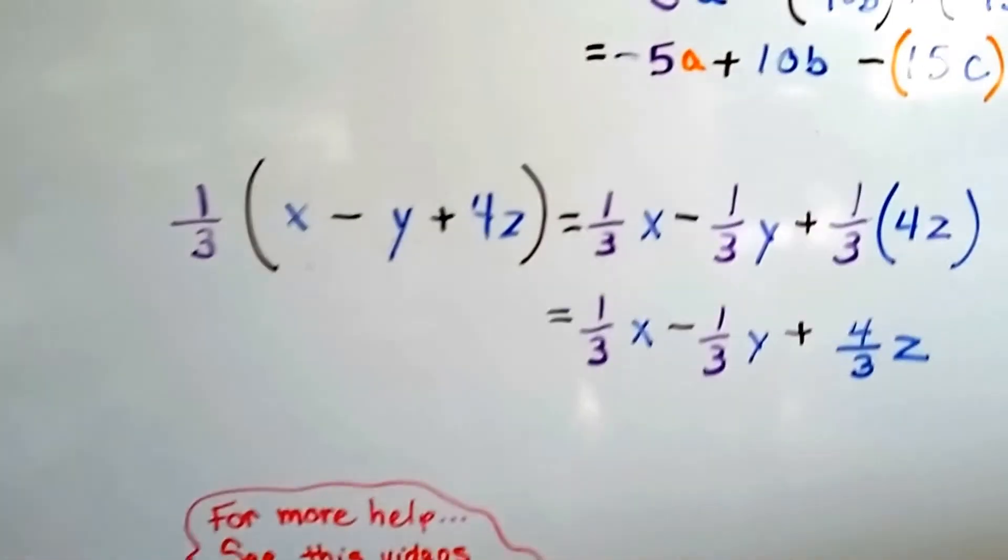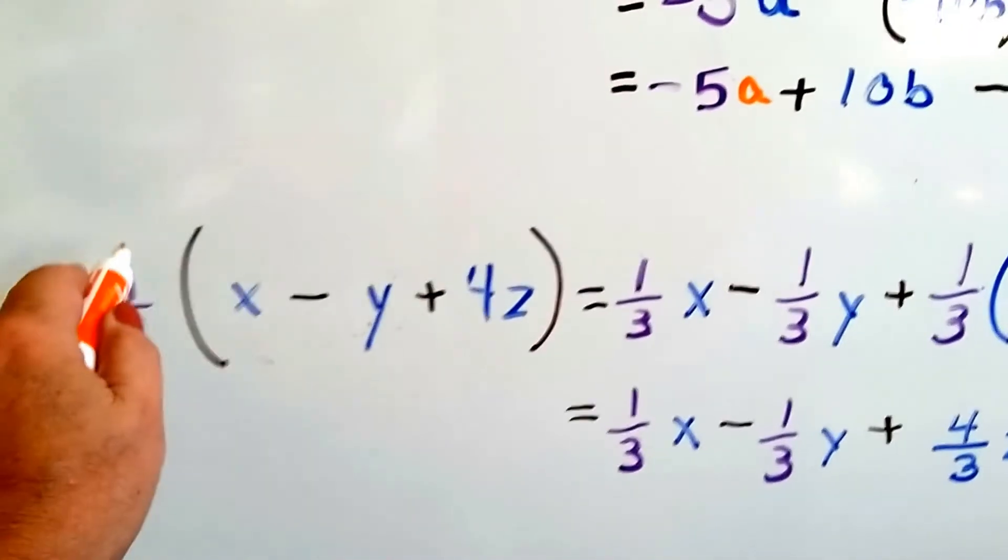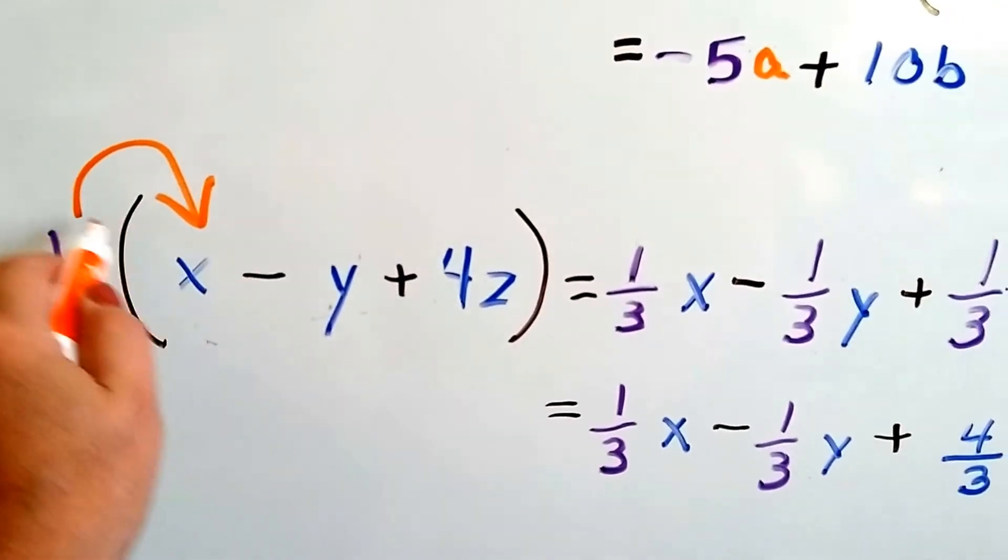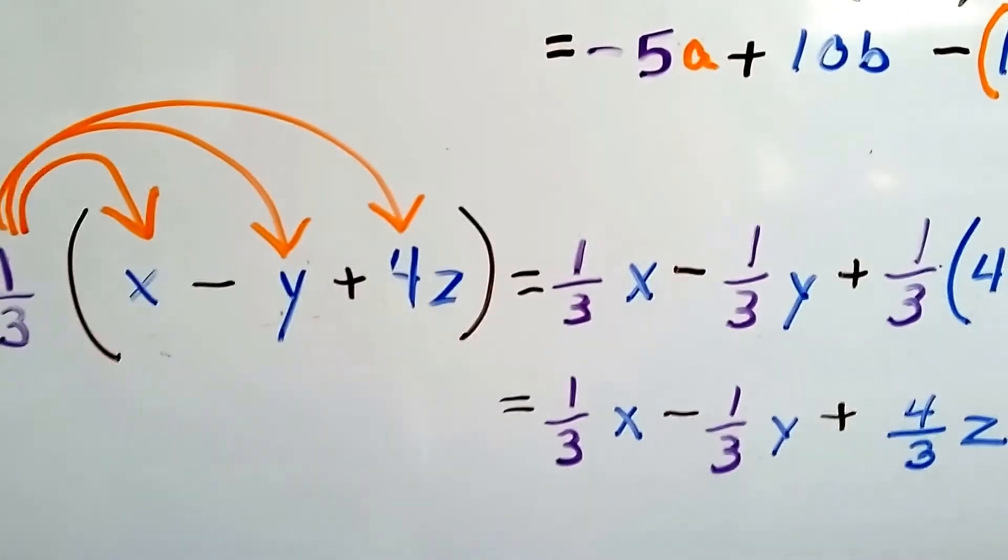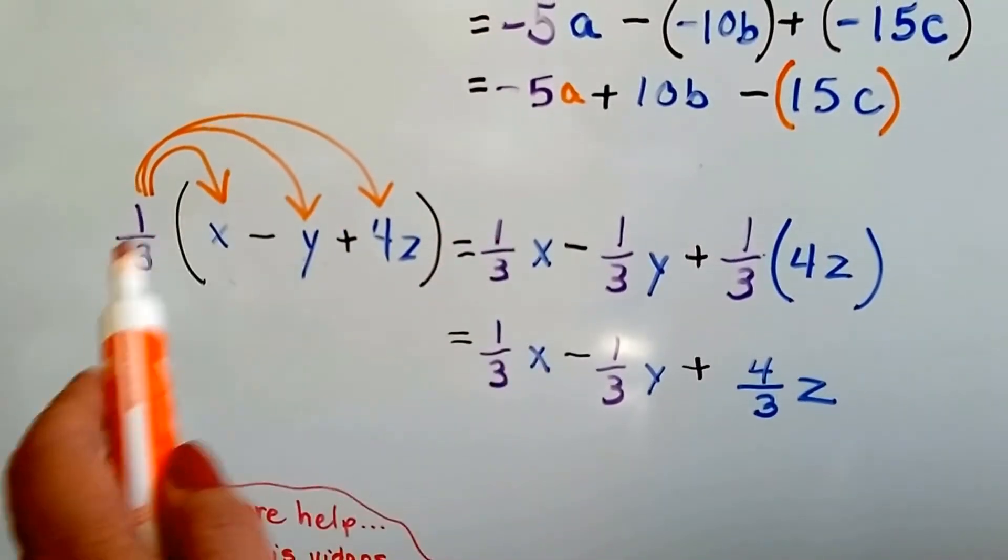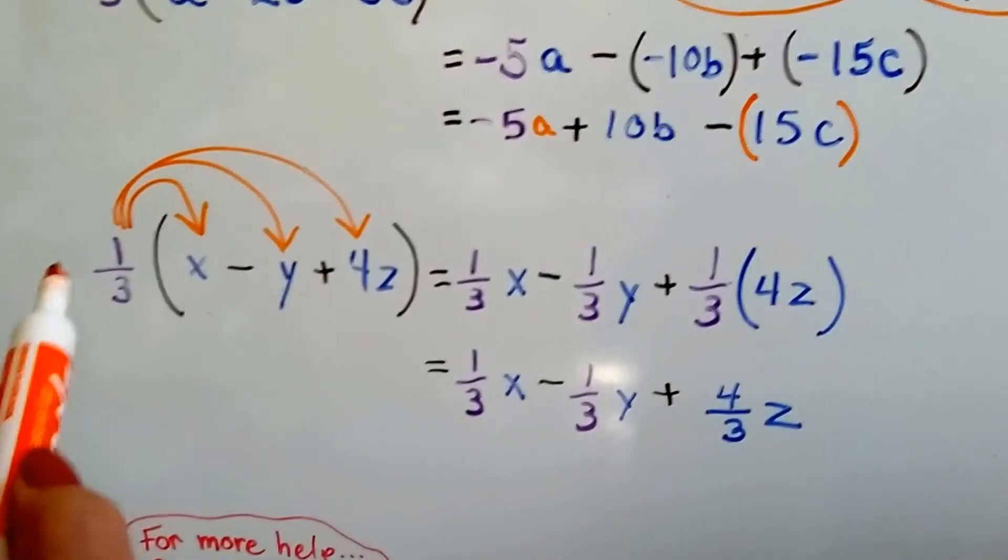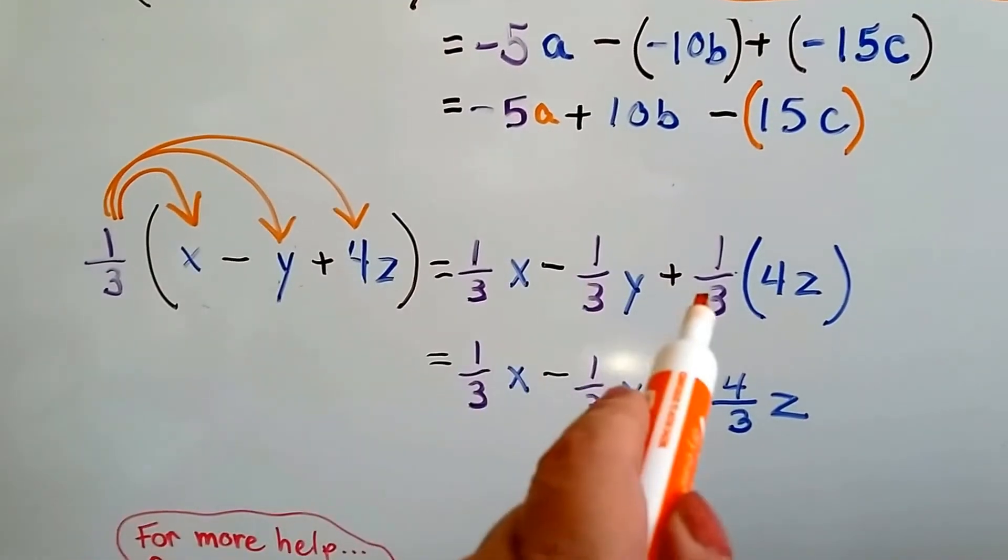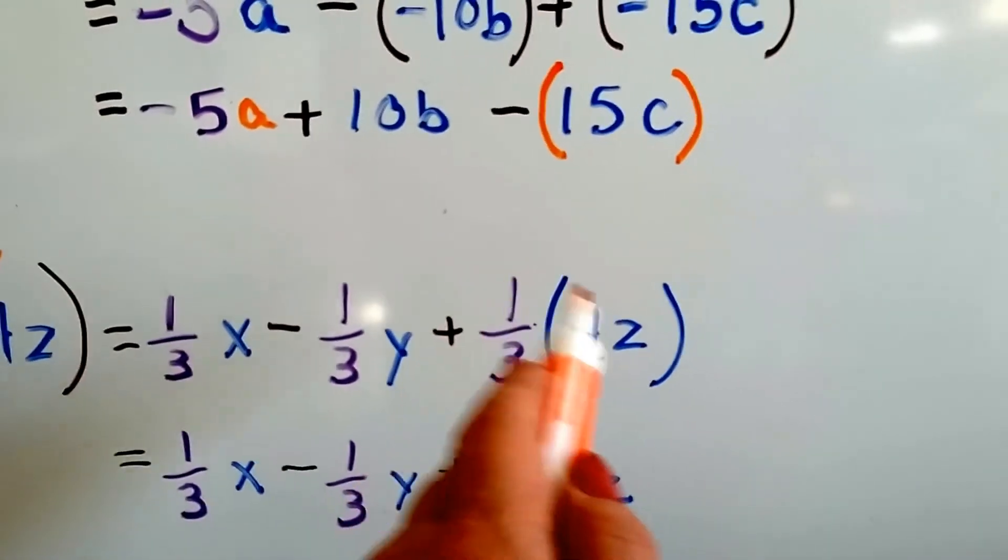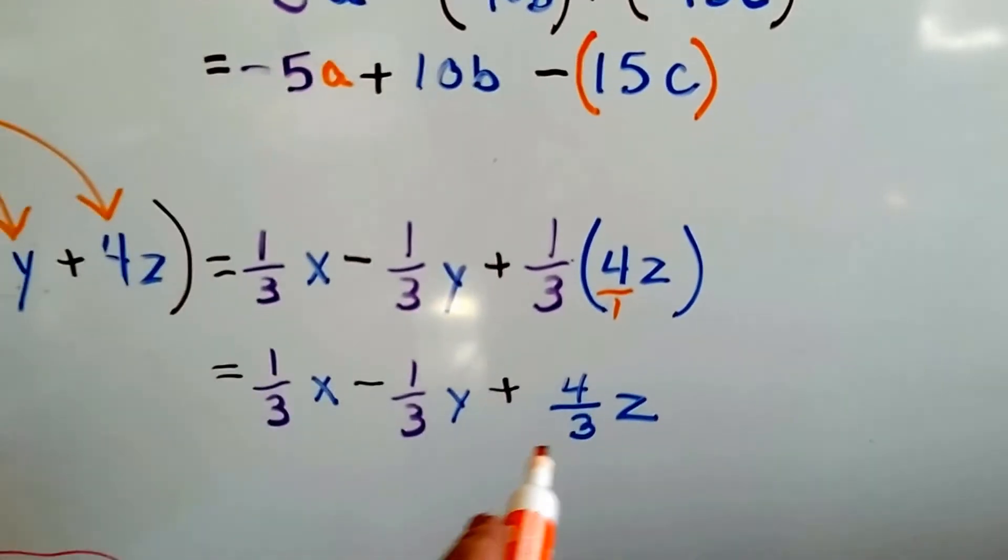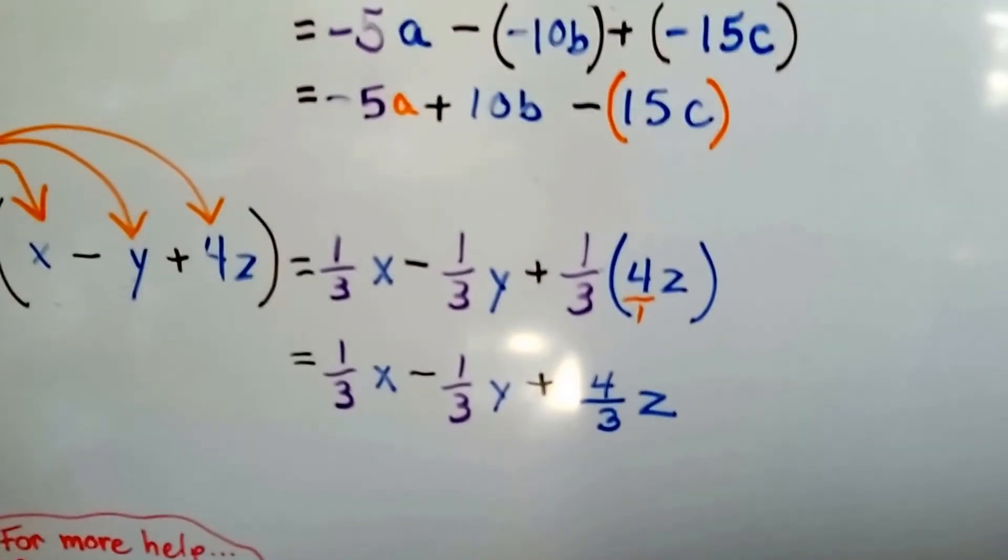Alright, let's try doing a fraction with variables and a coefficient in front of the z. We're going to distribute this one-third to the x, keep our minus sign, distribute our one-third to the y, keep our plus sign, and distribute our one-third to the 4z. So that's going to give us one-third x minus one-third y plus one-third times 4z. And we can put this over a 1. So we can just multiply straight across and we get 1 times 4 is 4 over 3 times 1 is 3. So it gives us a one-third x minus one-third y plus 4 over 3z.